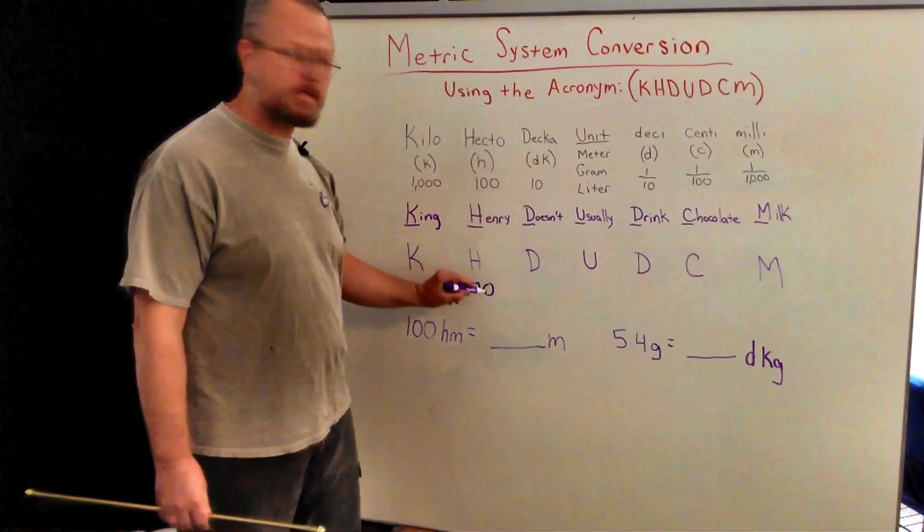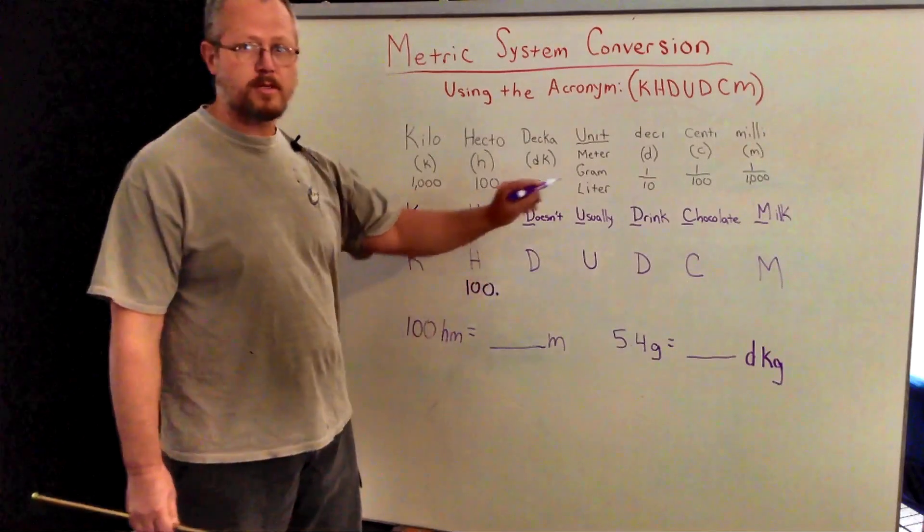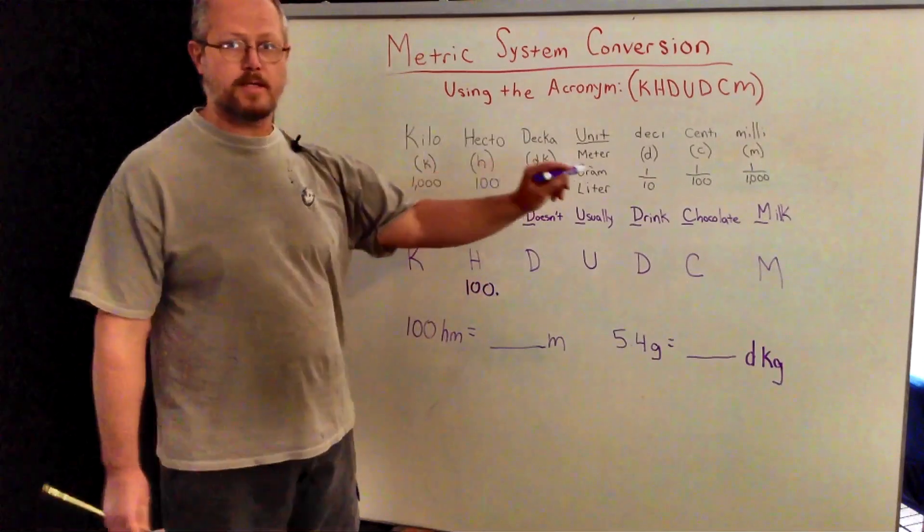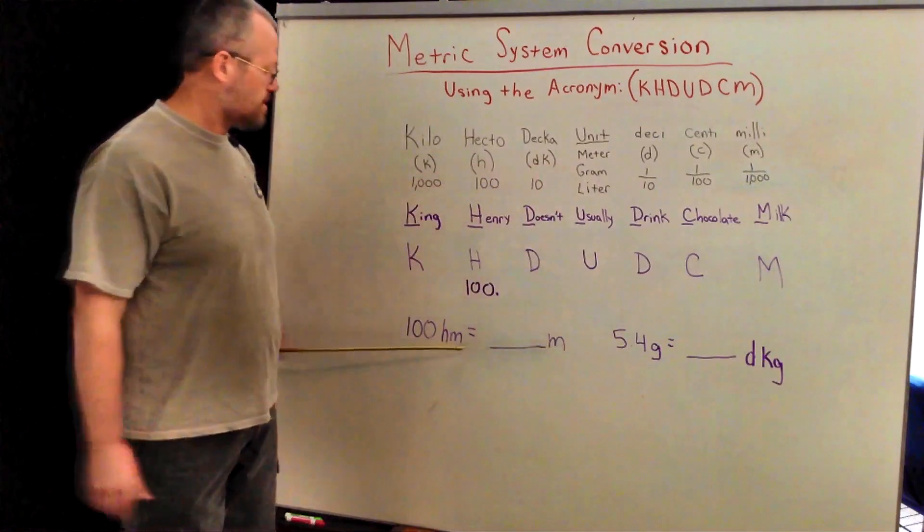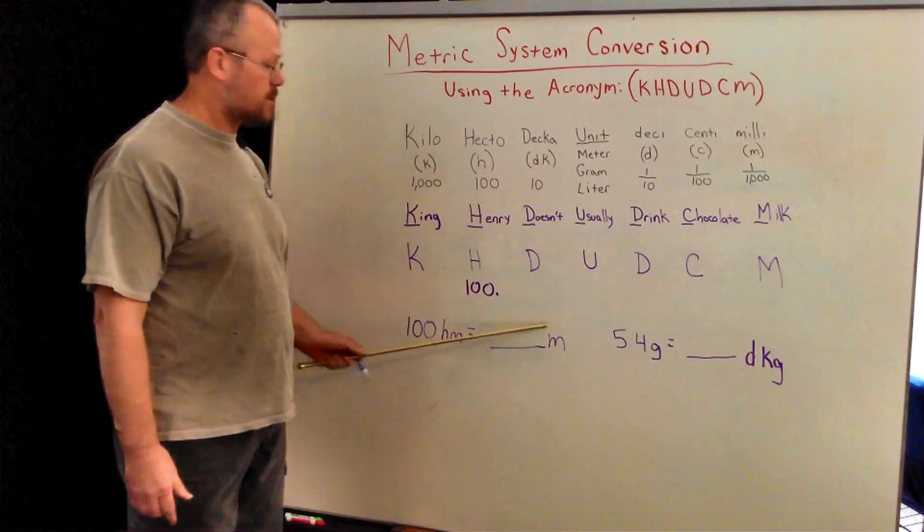And you always, the decimal point is very important. Either we're going to move left on the scale or right on the scale. And our next measurement, we want to see how many 100 hectometers equals how many meters.